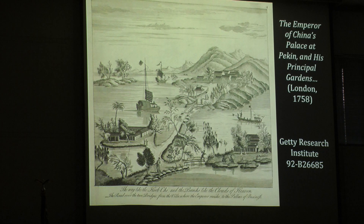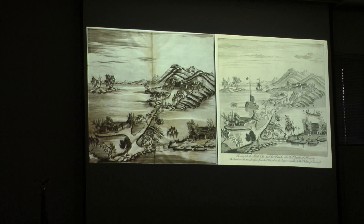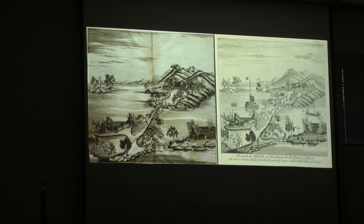In 1753, Ripa's prints were reinterpreted and published as 'The Emperor of China's Palace and His Principal Gardens.' Comparing the two versions side by side, quite a few additions were made to appeal to the public: an uninhabited landscape is suddenly filled with boats, figures carrying fishing sticks, and people walking along the shore. The publisher translated the unfamiliar landscape into the visual language of chinoiserie — the boats and figures familiar from lacquer and porcelain now appearing on a print of a Chinese garden.